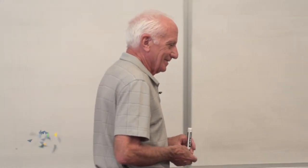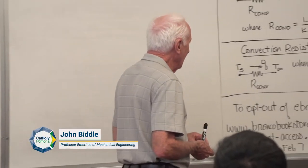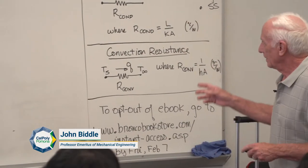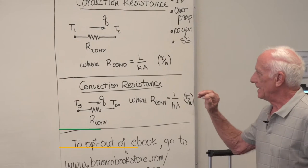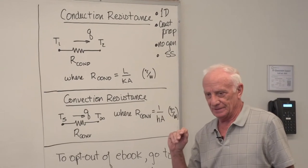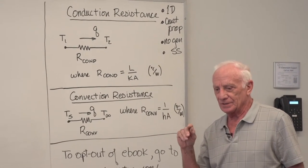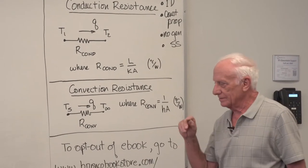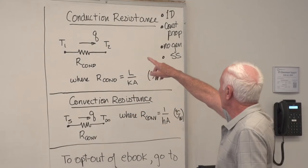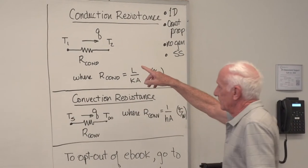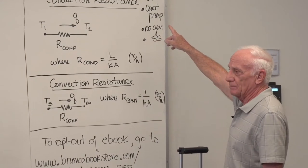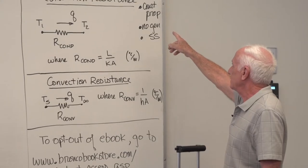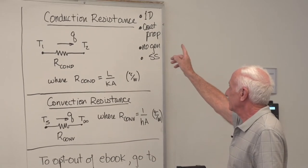We're starting Chapter 3. When we finished last Friday's lecture, we obtained the equation for two resistances. In order to use these resistances, we have in the first part of Chapter 3 the following conditions: 1D heat flow, constant properties, no generation, and steady state.